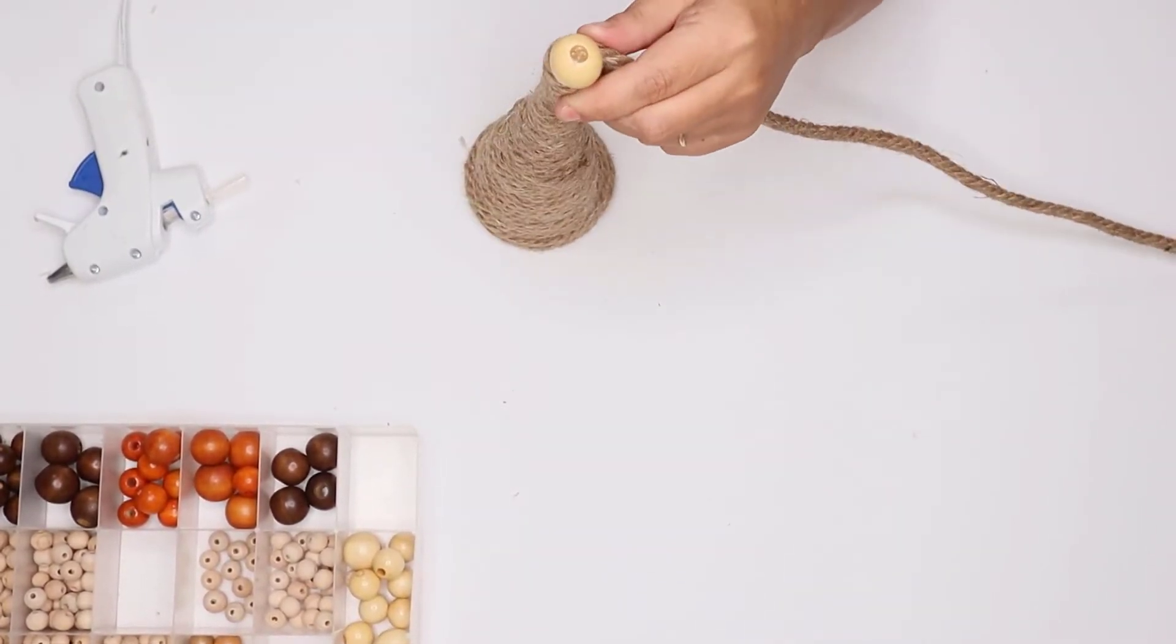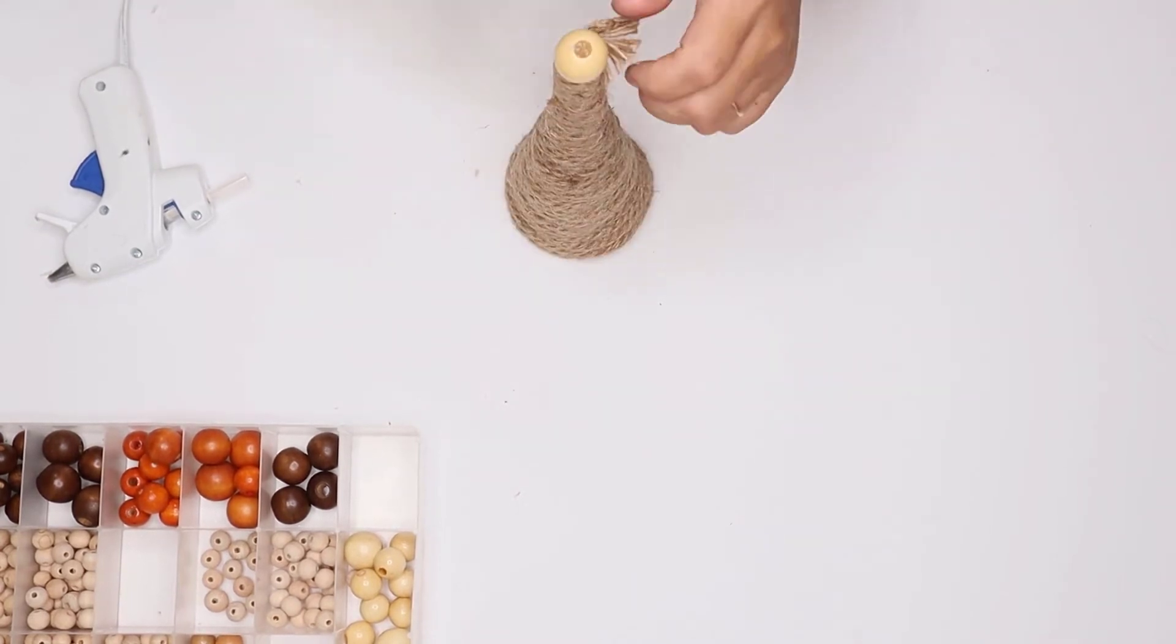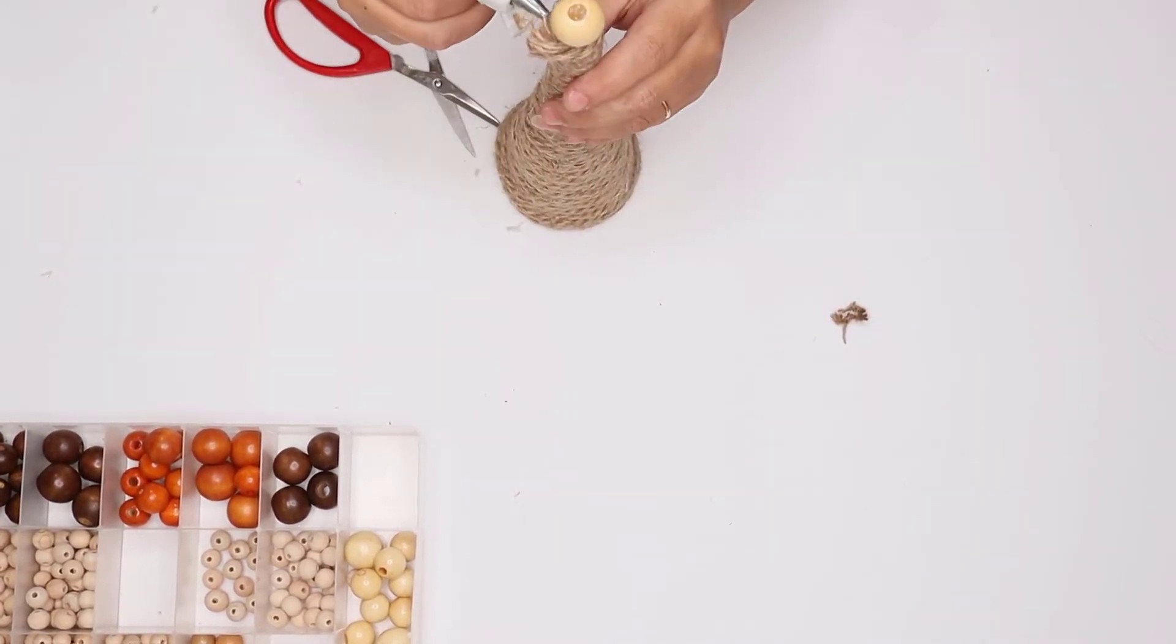Once I got to the top, I cut the rope and pressed it into the space so it was flush with the rest of the rope.